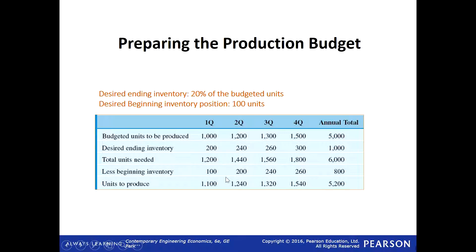The total for the year is 5,200 units needed, distributed by quarter: first, second, third, and fourth quarter. This is what you must produce as a production manager or engineer.